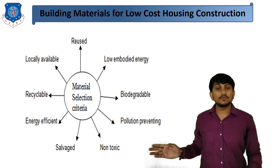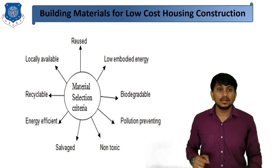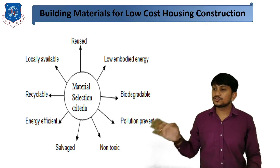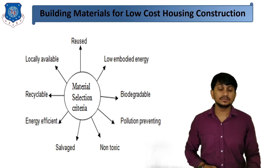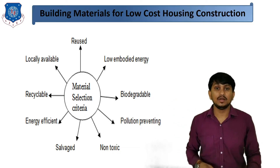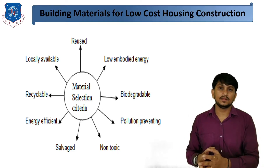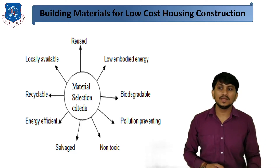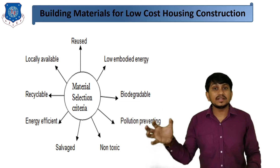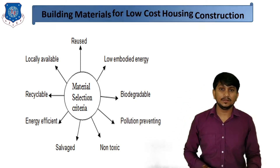The material should be non-toxic and should not harm the people living in the building. It should be pollution-preventing, biodegradable, and should have low embedded energy — meaning the energy consumption during the production phase of this material should be less. These are the material selection criteria for low-cost housing buildings.